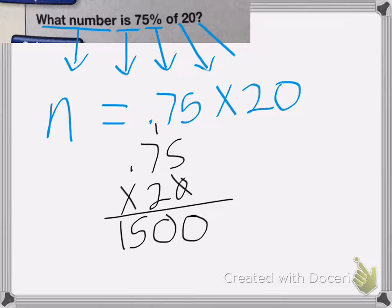Now remember, I need to count the decimal places. We have 1, 2 decimal places. So I'm going to move it over 1, 2 decimal places. So my answer is 15. Same answer. I can do it either way, whichever one is simpler.